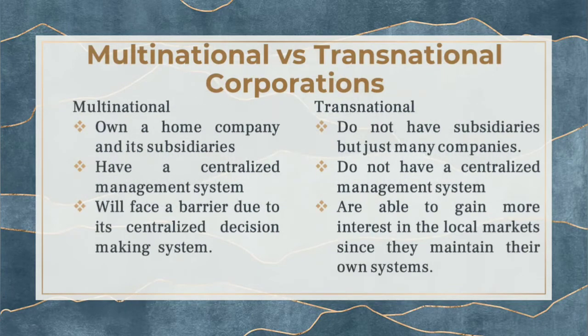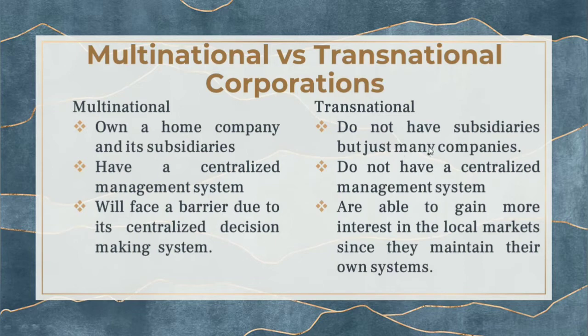The difference between multinational and transnational companies: A multinational has a home company and subsidiaries with a centralized management system, which can be a barrier due to centralized decision-making. A transnational does not have subsidiaries but many companies, has no centralized management system, and is able to gain more traction in local markets since each maintains its own systems.